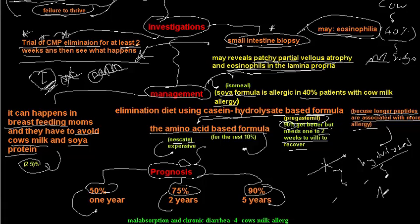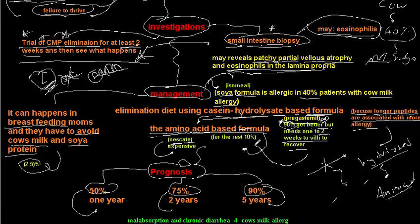For the remaining 10% who do not respond to hydrolyzed formula, we use an amino acid-based formula. Amino acids are even shorter than peptides and are therefore less allergenic. An example of an amino acid-based formula is Neocate.